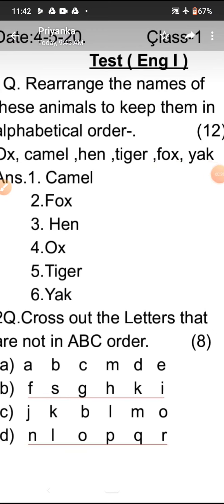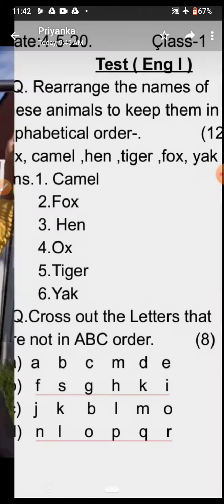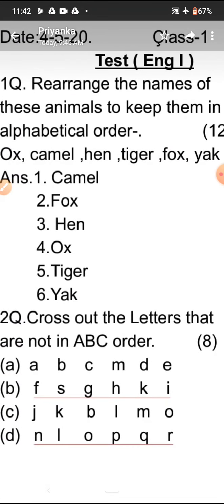You all are requested to take out your test copy and match the answers. Your first question was: rearrange the names of these animals to keep them in alphabetical order. And your answer is like this: at first number, camel will come, then fox, then third number hen will come, then ox will come, then tiger, and at last place yak will come. I hope students you have done the same.